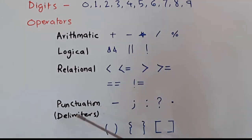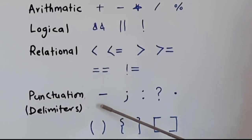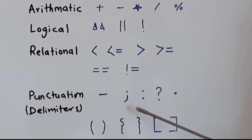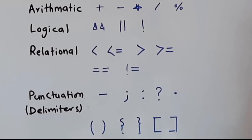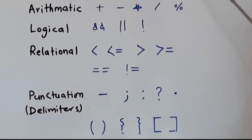Punctuation marks or delimiters include: a dash, semicolon, colon, question mark, full stop, round brackets (opening and closing), curly braces (opening and closing), and square brackets (opening and closing). All these letters, digits, and operators can be found on your computer's keyboard, so we can use all of them when typing a Java program.